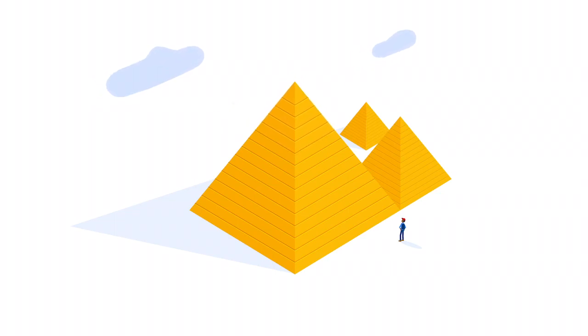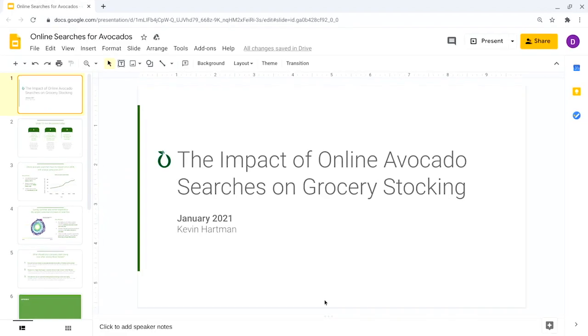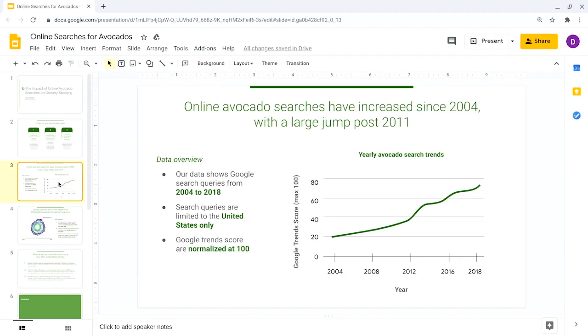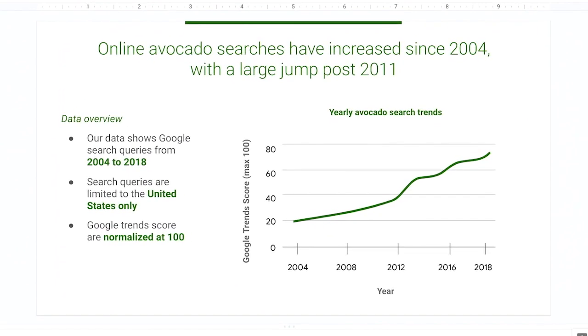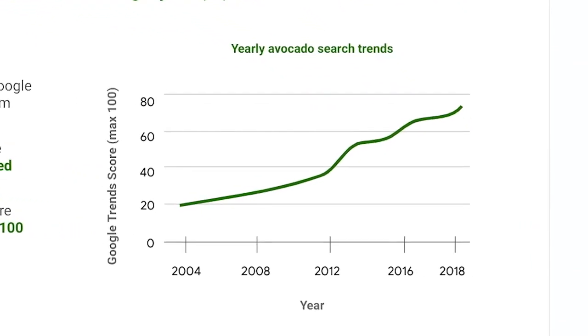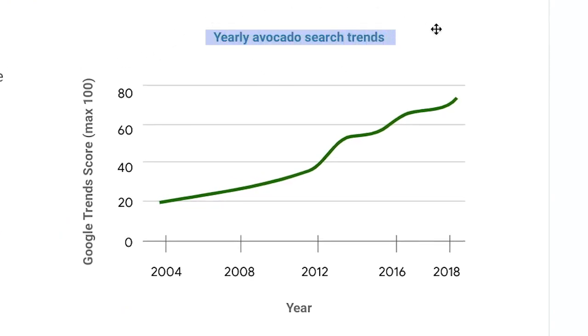You start with the most basic information: introduce the graphic you're presenting by name. This directs your audience's attention. Let's open the slide deck we were working on earlier — we've got the framework we explored last time in our two data viz examples. According to the McCandless method, we want to introduce our graphic by name. The name of this graph, Yearly Avocado Search Trends, is clearly written here. When we present it, we'll be sure to share that title with our audience so they know where to focus and what the graphic is all about.